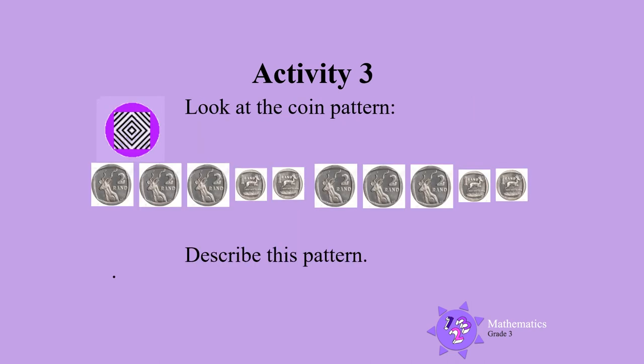Activity 3. Look at the coin pattern. Describe this pattern. Can you see that this pattern has 3, 2 rand coins? Then 2, 1 rand coins. And then the pattern repeats. Use coins to make more money patterns, then describe this pattern to your parent. Have fun!